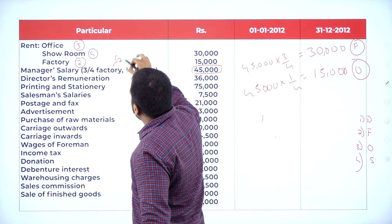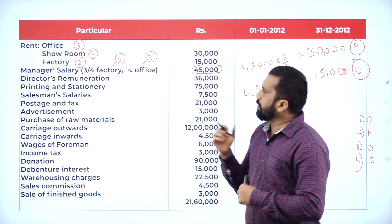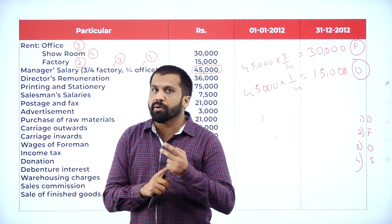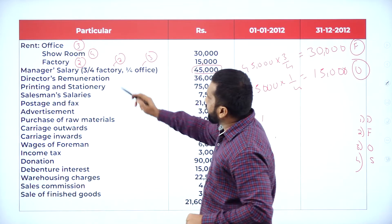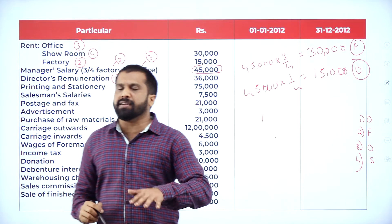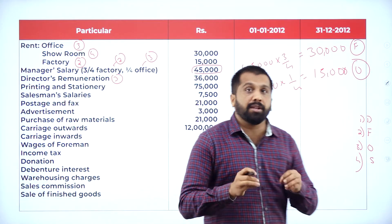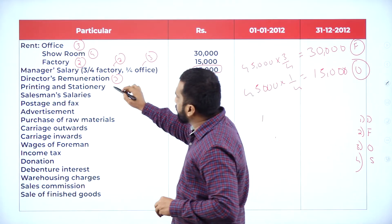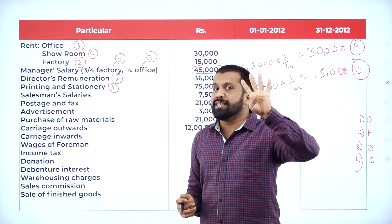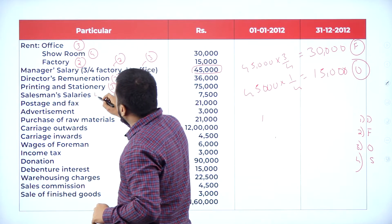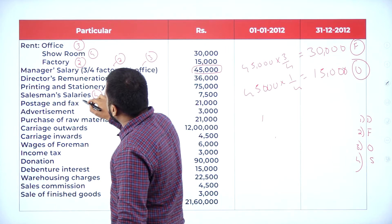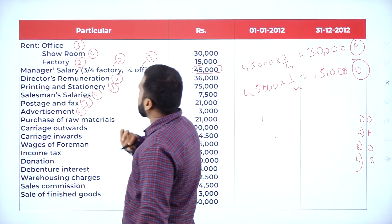Director's remuneration — the director is seated in the office, so it always goes under office, which is category 3. Printing and stationery — we keep the printing machine and photocopier in the office, so it comes under office, category 3. Salesman's salary — salesmen are needed for selling purposes, so it goes under selling and distribution, category 4. Postage and fax — postage happens in the office, so it is category 3. Advertisement is for selling purposes, so it is category 4.